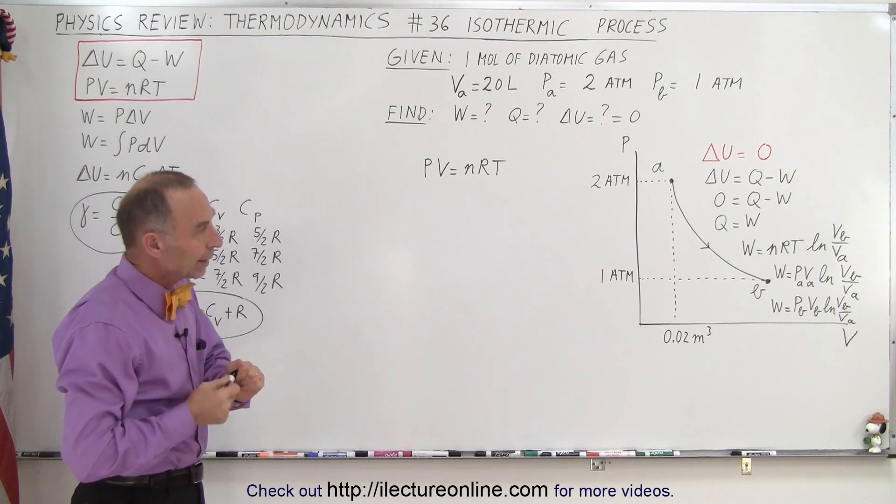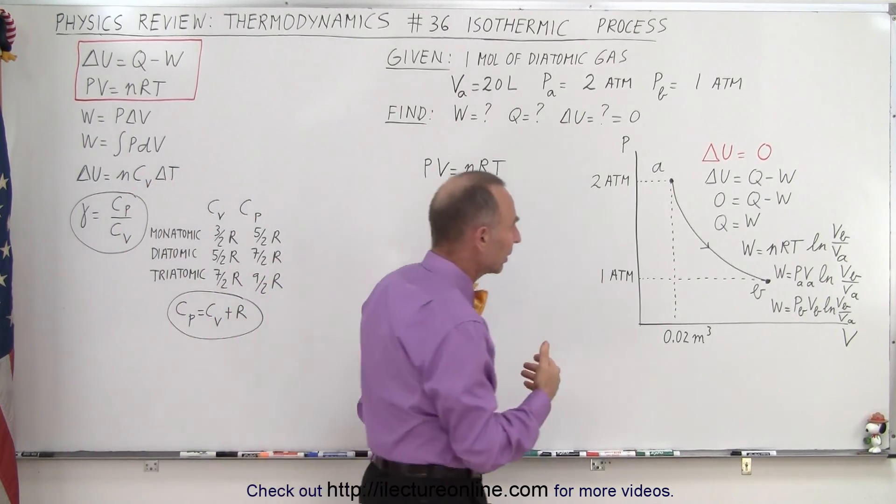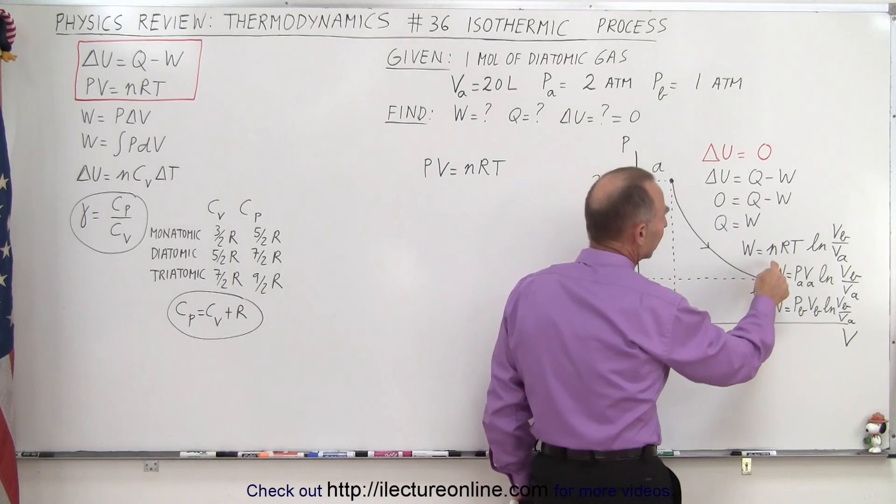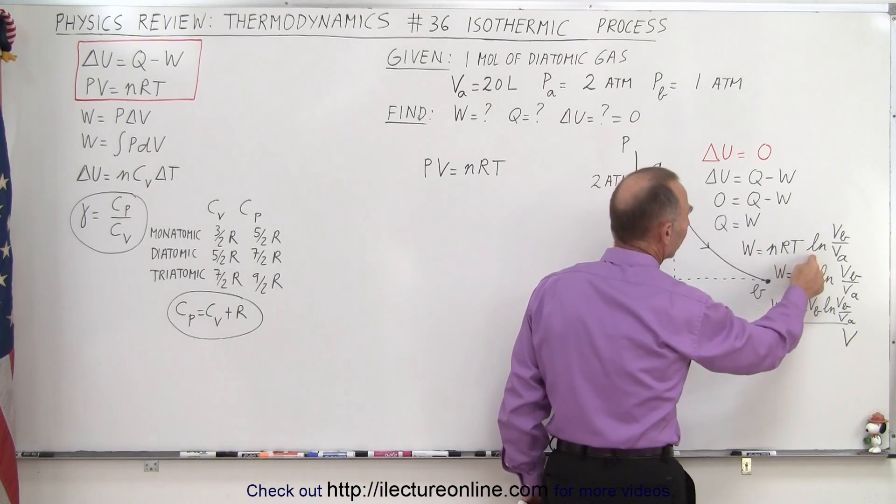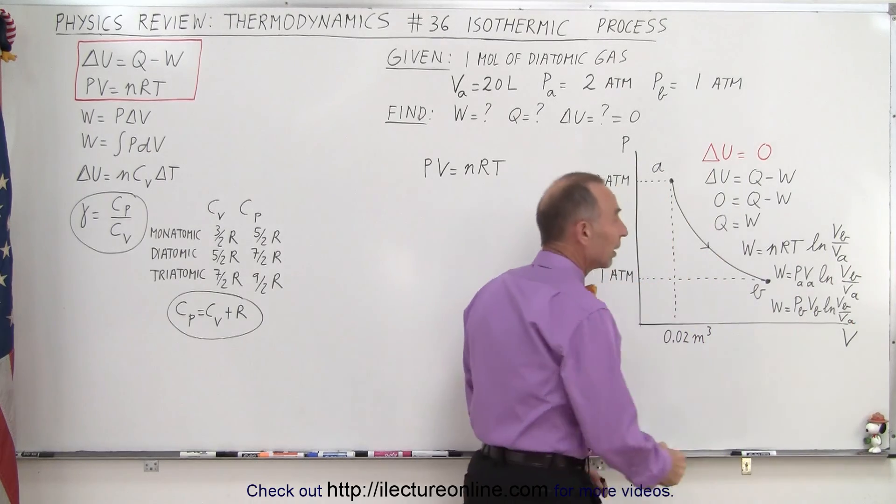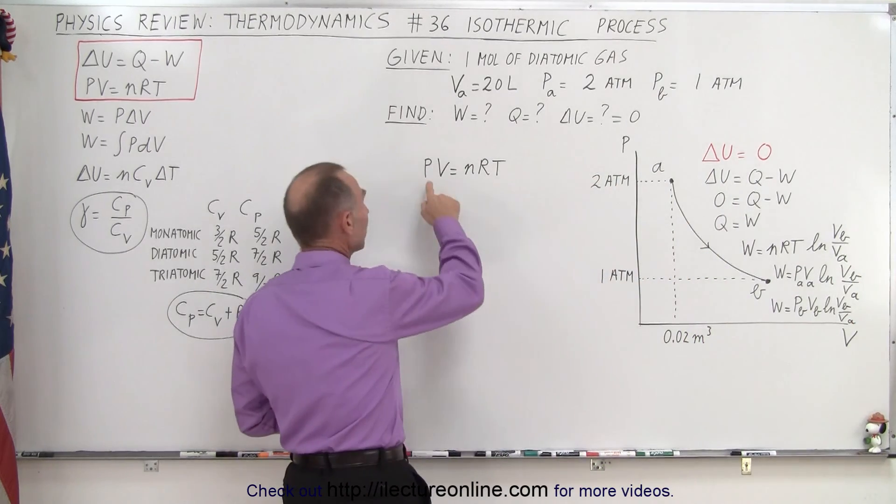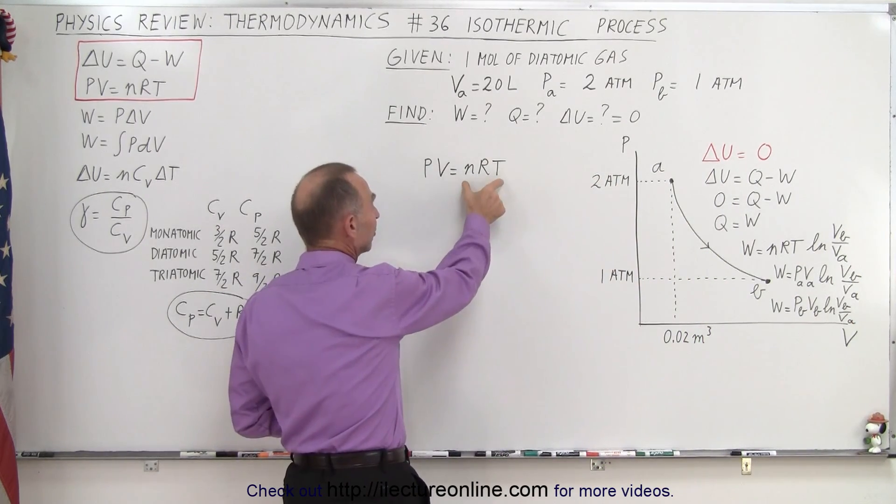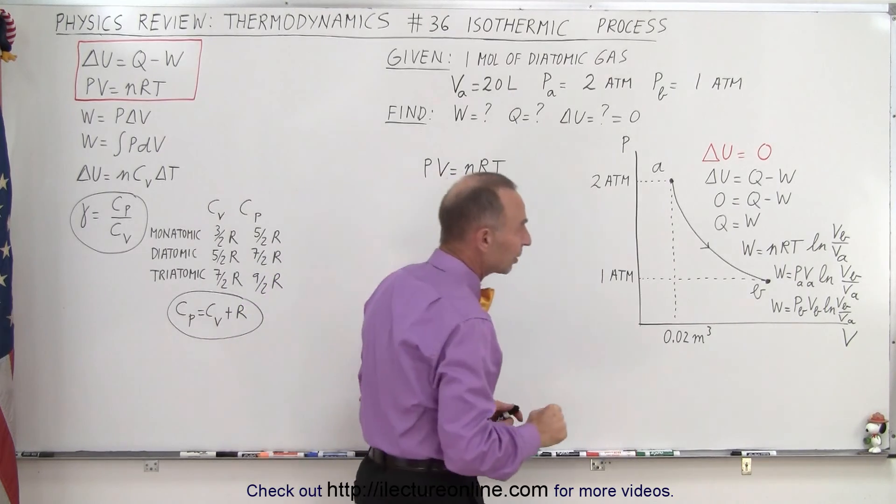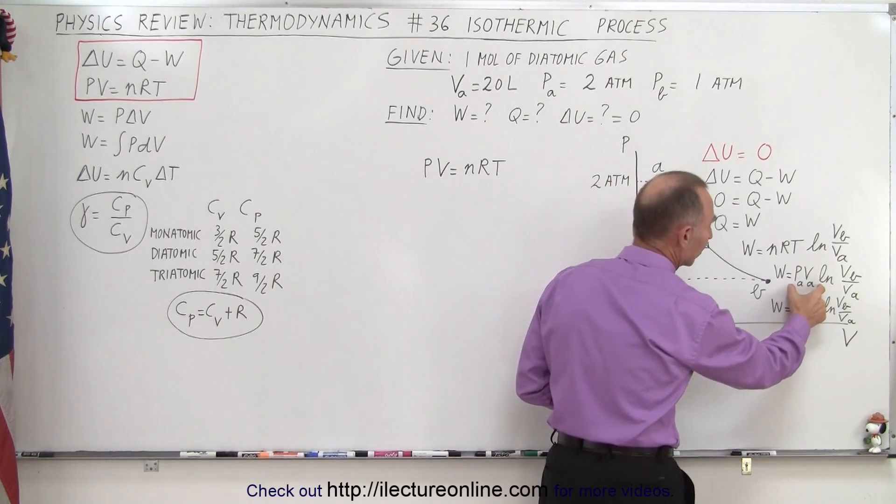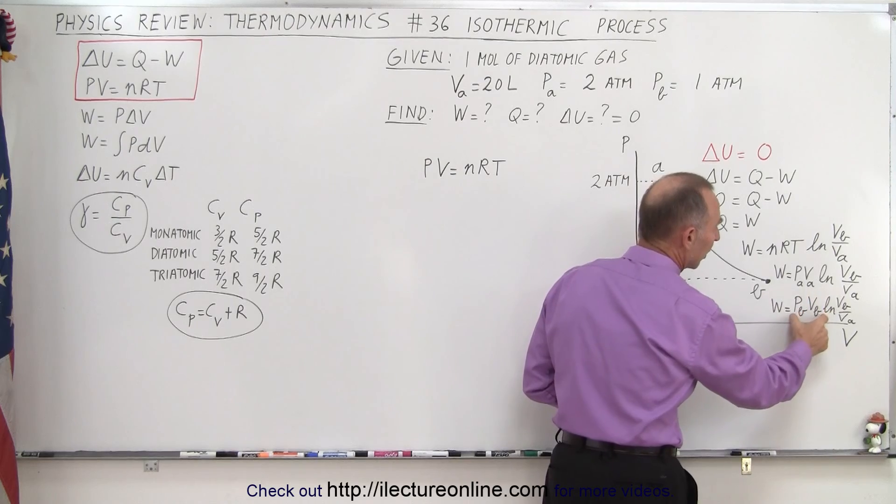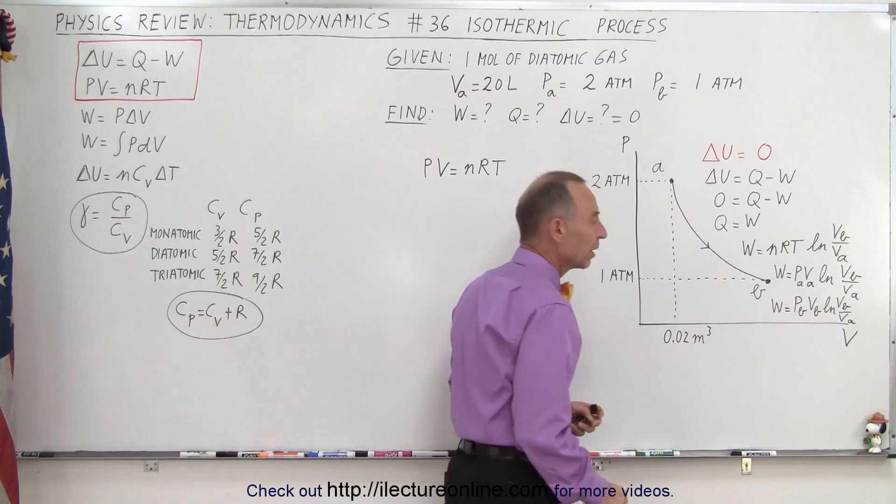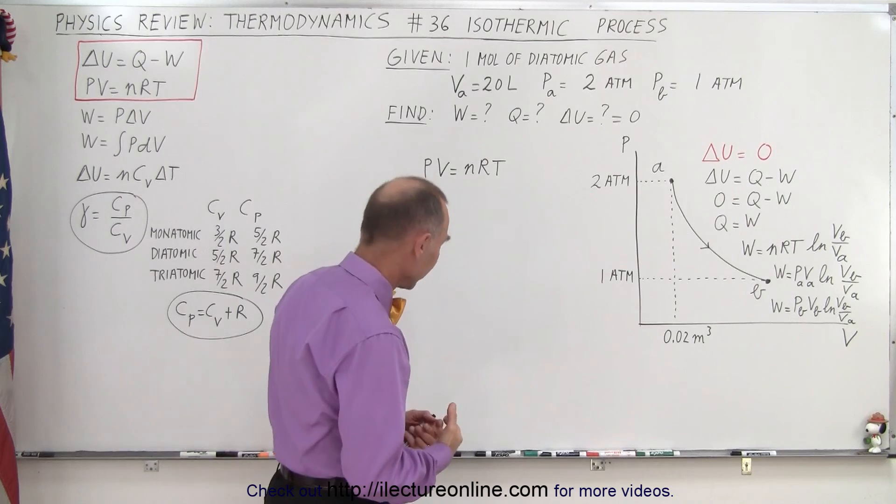Now the work done by an isothermic process can be written as nRT times the natural log of the final volume divided by the initial volume. Since when we use the ideal gas equation, nRT is equal to the product of the pressure and the volume, we could also write it as the product of the pressure and the volume of A, or the product of the pressure and the volume of B. So let's now try to calculate the work done.